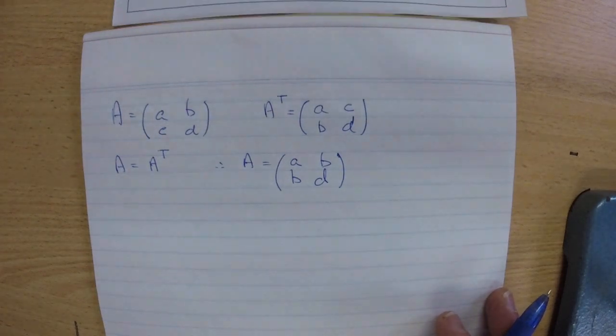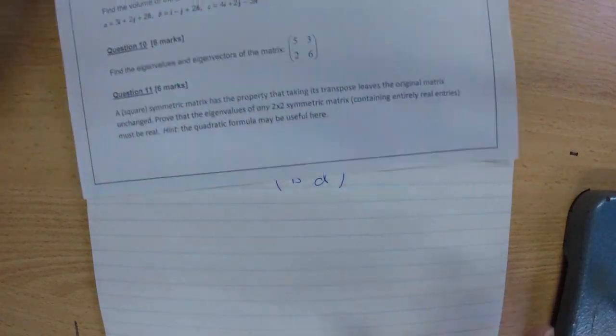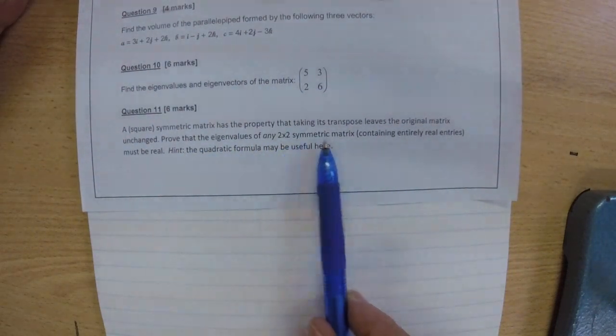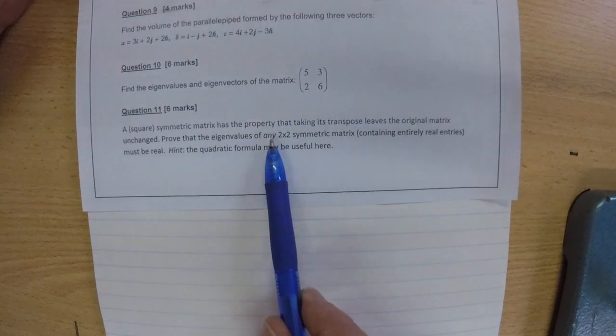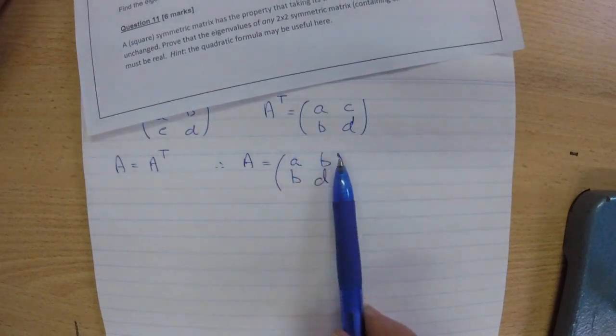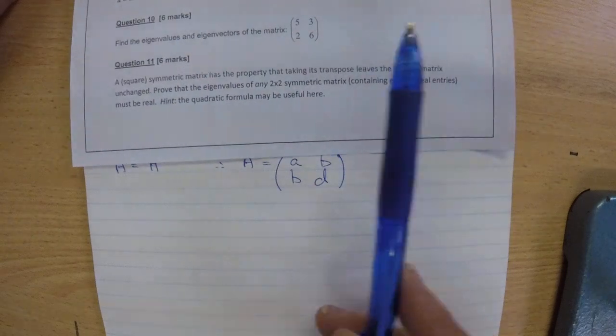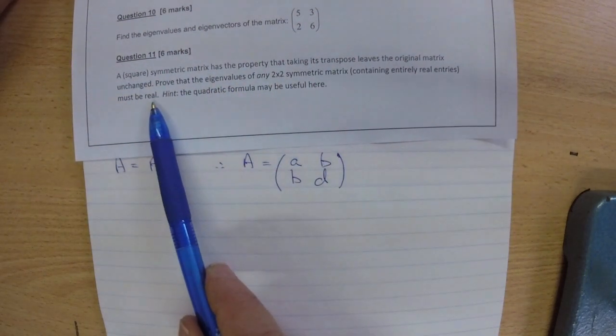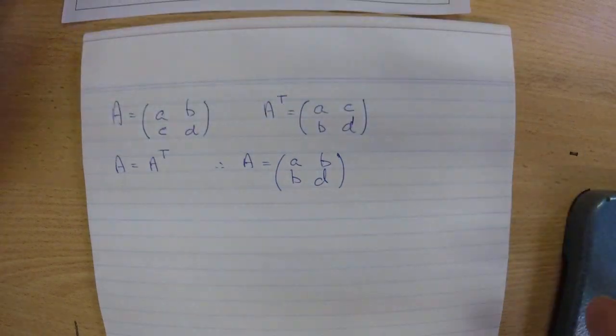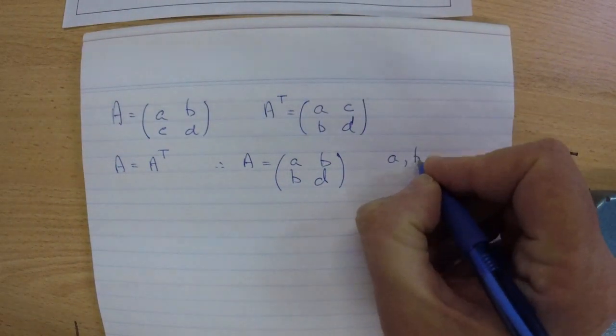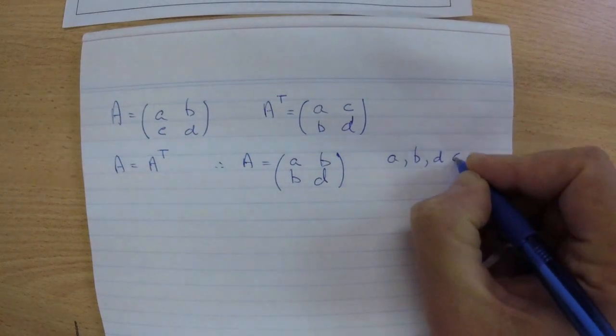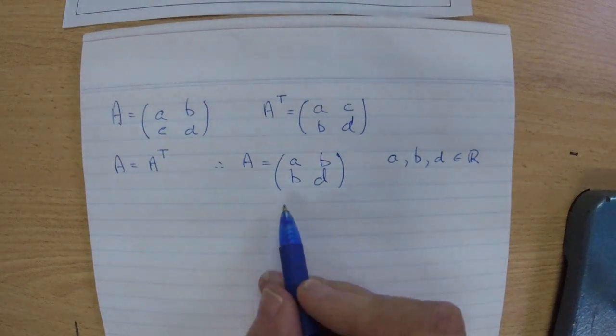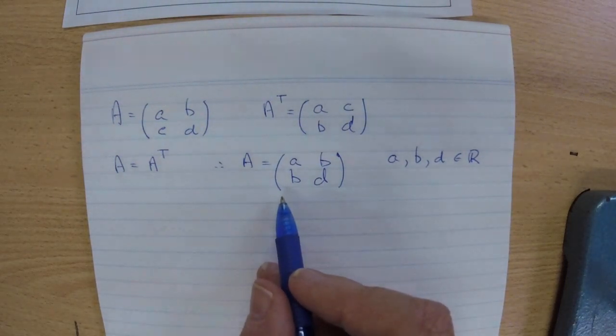Now let's go back and see what we're supposed to do with this. We've been told, prove the eigenvalues for this 2x2 symmetric matrix. The fact that it says any means we have to use pronumerals to make it a general solution rather than specific numbers. So prove the eigenvalues must be real. We will note that A, B, and D are elements of the real number system, because it says we can assume that.